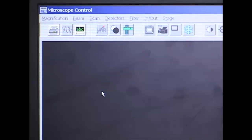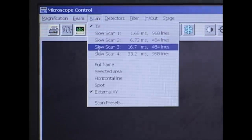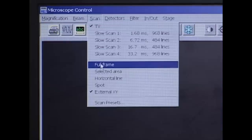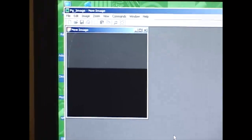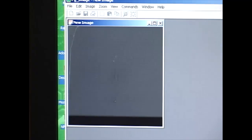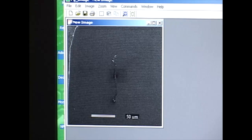Now on the SEM computer, change scan to external XY. Click command, digital imaging, new file, acquire. So this shows that the NPGS computer is getting the feedback from the microscope detector.